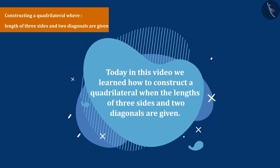Today in this video, we learned how to construct a quadrilateral when the lengths of three sides and two diagonals are given. In the next video, we will see some examples based on these.